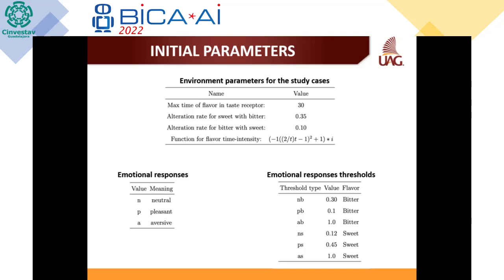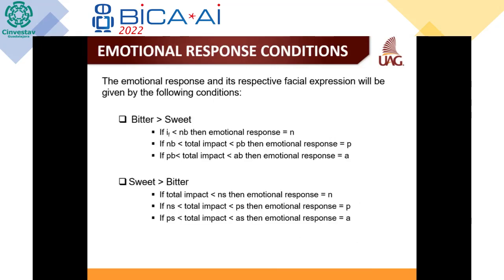To test the system, we provided this timing function — basically a graph. We also provided emotional responses, which in this case are neutral, pleasant, or aversive, along with emotional response thresholds. Depending on the value of each flavor, it will provide a response based on these threshold values. We also set conditions for what happens when bitter is greater than sweet and when sweet is greater than bitter, because if you taste two flavors at the same time one will dominate, and depending on which is greater, the output is handled differently.